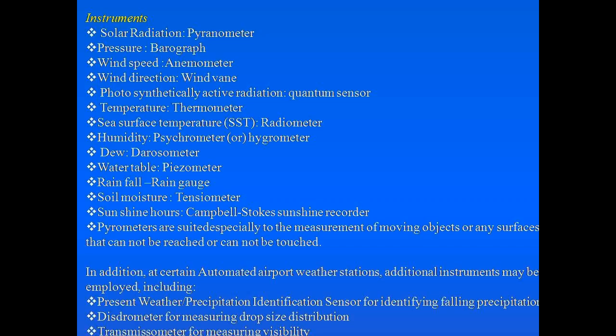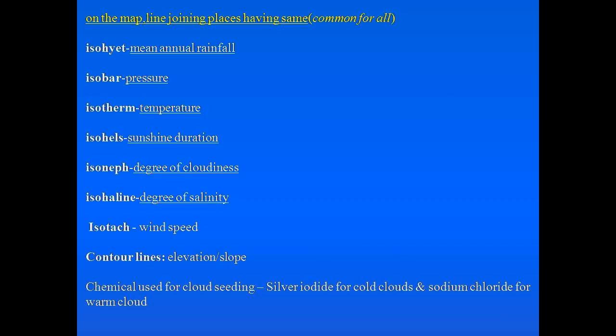At automated airport weather stations, additional instruments are used alongside standard weather station instruments. To measure precipitation amount and drop size distribution, a distrometer is used.